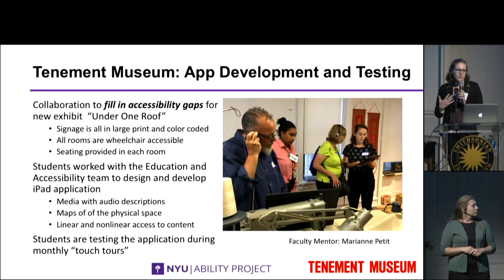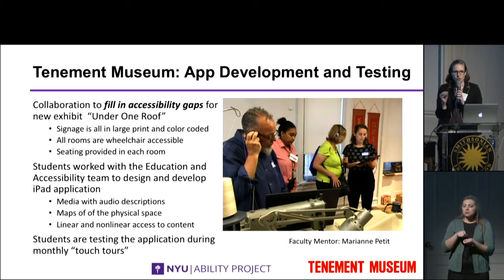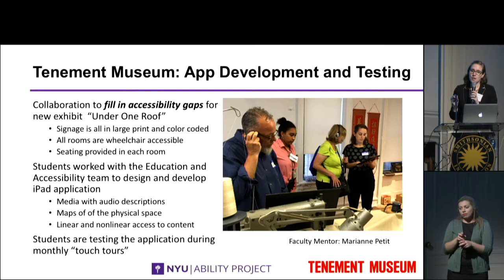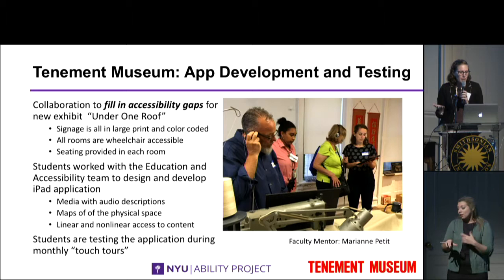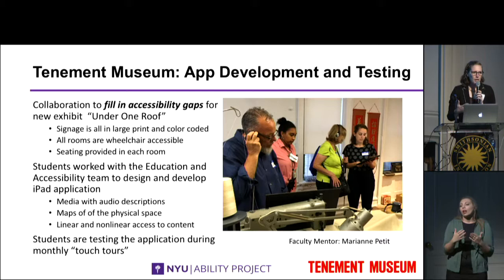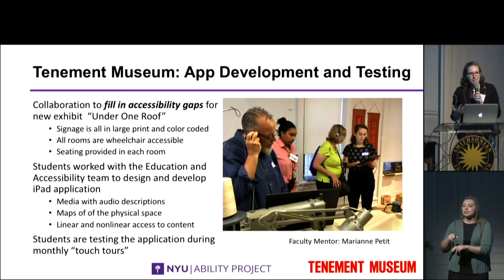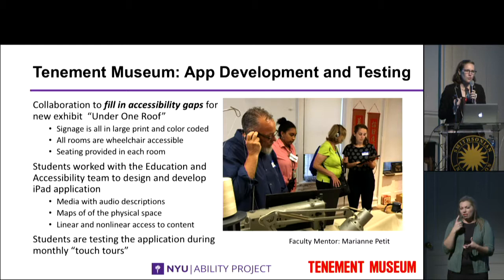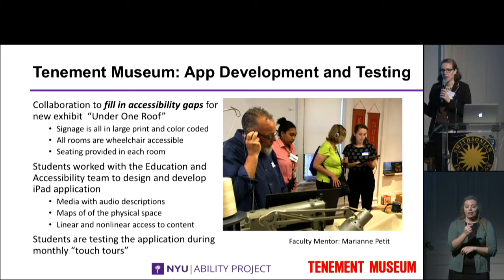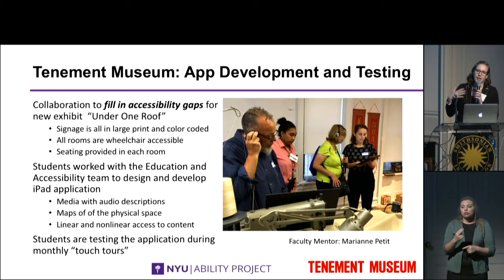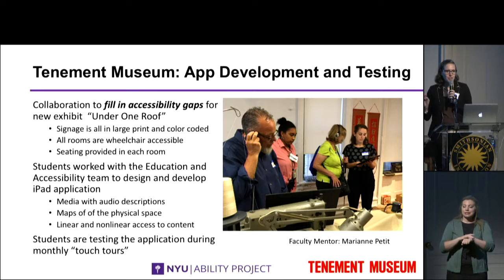A different project we did with the Tenement Museum was much more focused on identifying the specific gaps that a cultural institution has in accessibility that they may not have the resources or expertise to solve. They had a new exhibit called 'Under One Roof' and had already done a lot of work on accessibility — the space was wheelchair accessible and there was thought put into signage and seating — but they realized they could do more in terms of adding audio descriptions and captioning to their multimedia content. So we worked with them to create a group of about 15 students who worked hourly to address those specific gaps, and the students are evaluating them in events called touch tours, where they open the museum exclusively to individuals who benefit from tactile interactions or captioning.